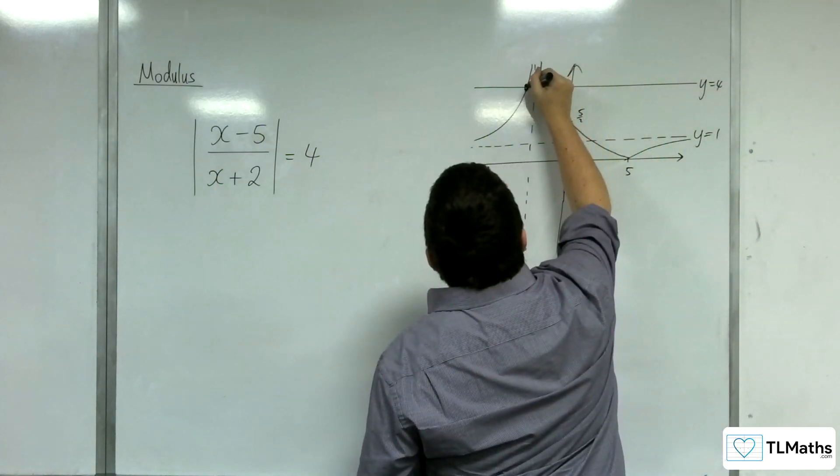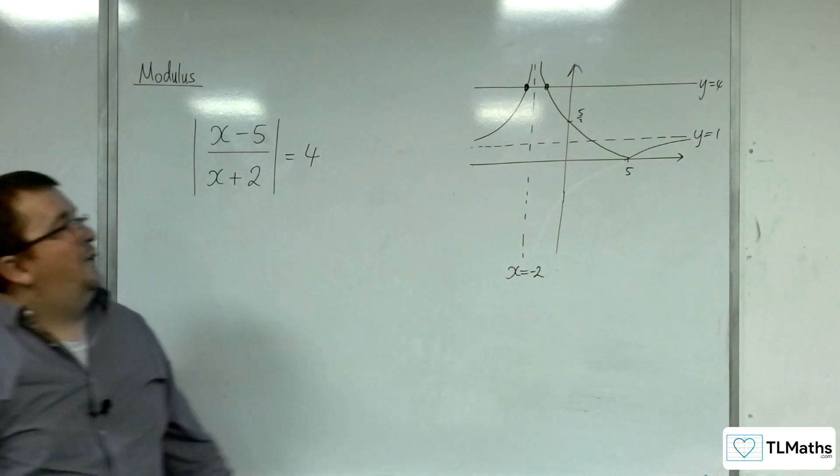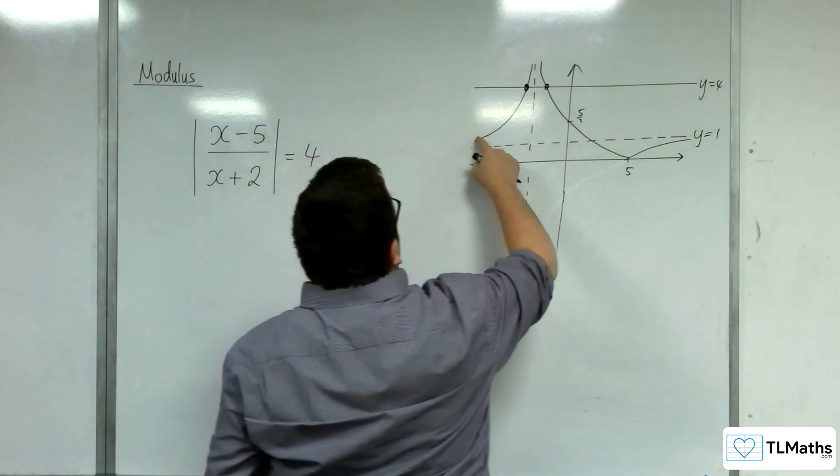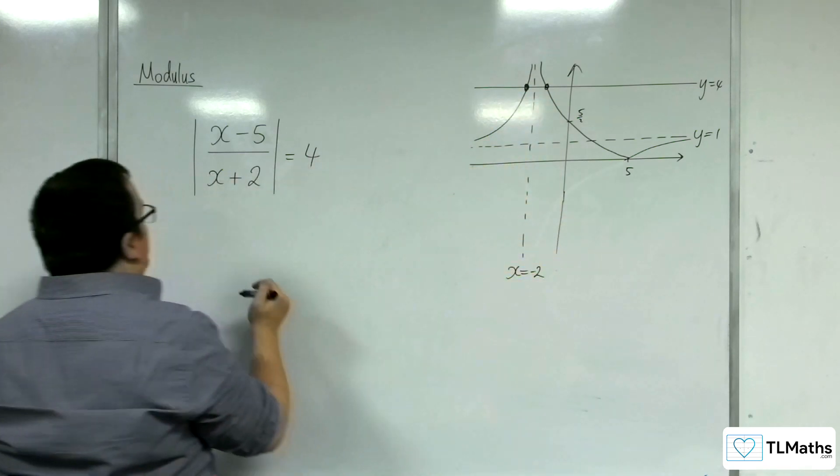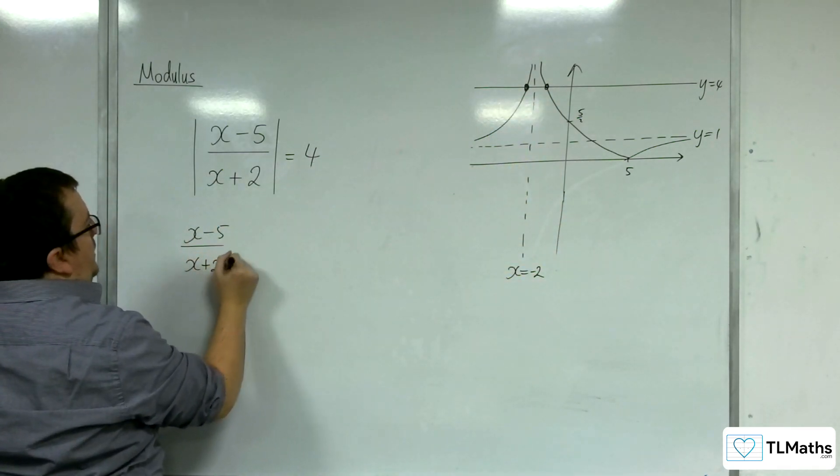and so there are two points of intersection that I'm interested in. The first point of intersection here is where y equals 4 is intersecting the original part of the curve. So, x take away 5 over x plus 2 is equal to 4.